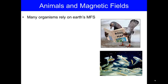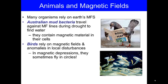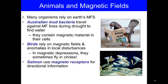Many organisms rely on Earth's magnetic field. Australian mud bacteria travel against magnetic field lines during drought to find water, and they contain magnetic material in their cells. Birds rely on magnetic fields, and anomalies or local disturbances can cause them to fly in circles — meaning human disruptions to the magnetic field can interfere with bird migration. Salmon use magnetoreceptors for directional information.